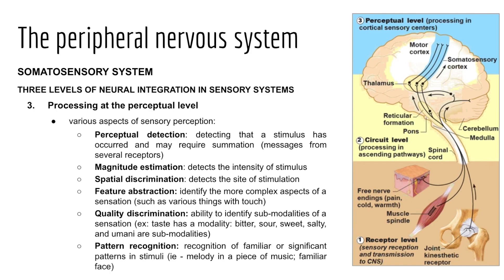Quality discrimination, which we'll revisit in Chapter 15, is the ability to identify submodalities of a sensation — for example, identifying taste as bitter, sour, sweet, salty, or umami. Finally, pattern recognition is the process by which visually presented objects are identified, categorized, and named. We recognize patterns in stimuli — like identifying a melody in music or recognizing familiar faces among strangers.